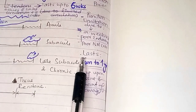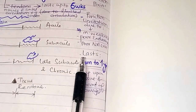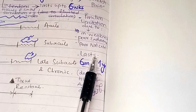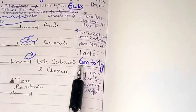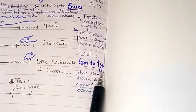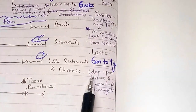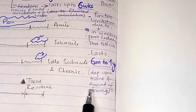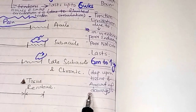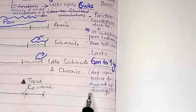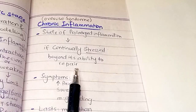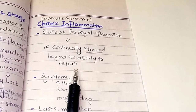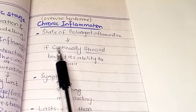The chronic stage lasts six months to one year, and this depends upon the tissue involved and the amount of damage the tissue has undergone.